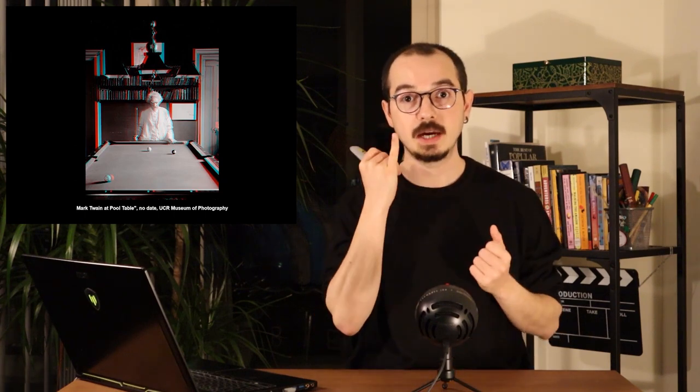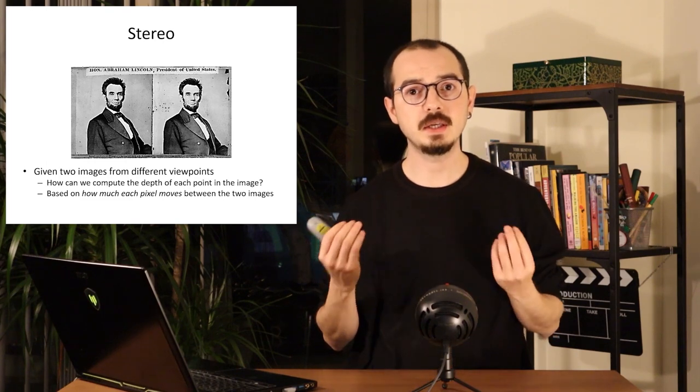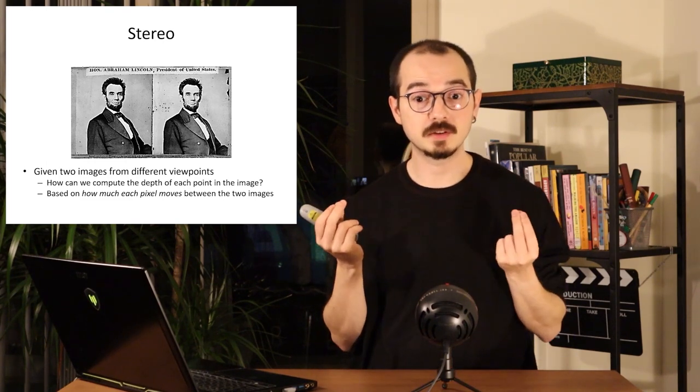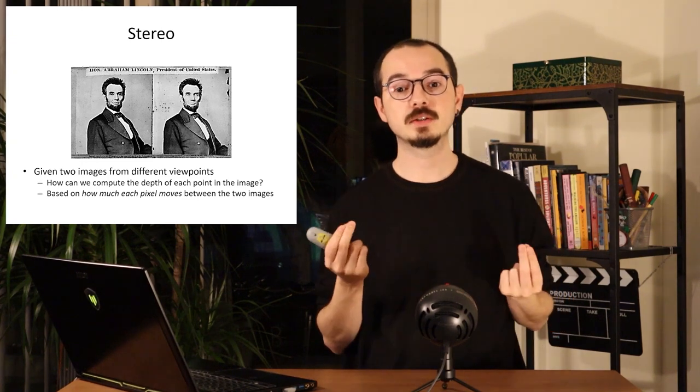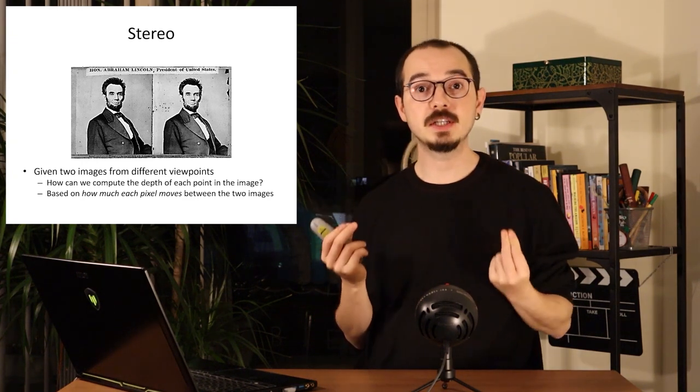This is an example of a stereo image. You may have seen the cyan and red 3D glasses — this is how you see them; if you have a pair, have a look at it. In stereo, we have an image pair from slightly different viewpoints and we want to compute the depth of each point.